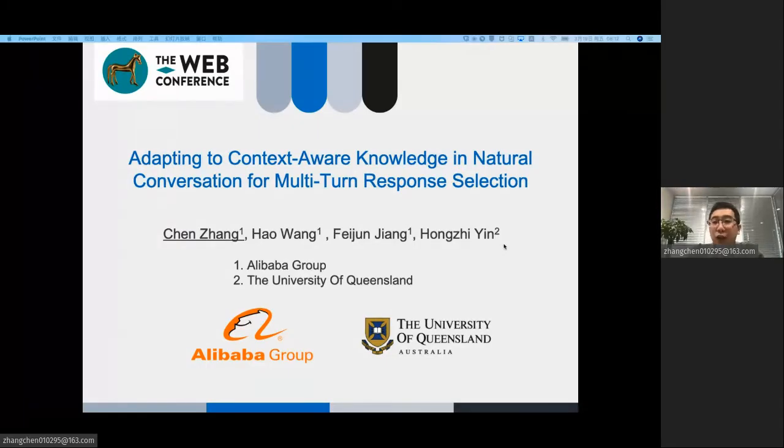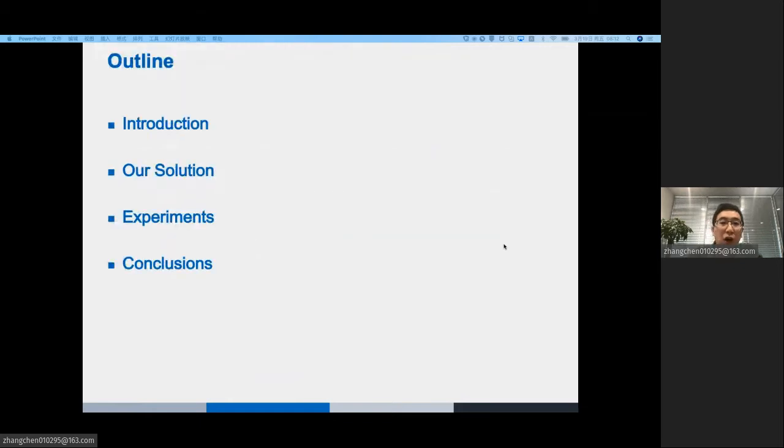Hello, everyone. My name is Chen Zhang. I come from Alibaba Group. Today, I am very glad to introduce our paper. The topic is adapting to context-aware knowledge in natural conversation for multi-turn response selection. My talk contains four parts. Let's begin with the introduction.